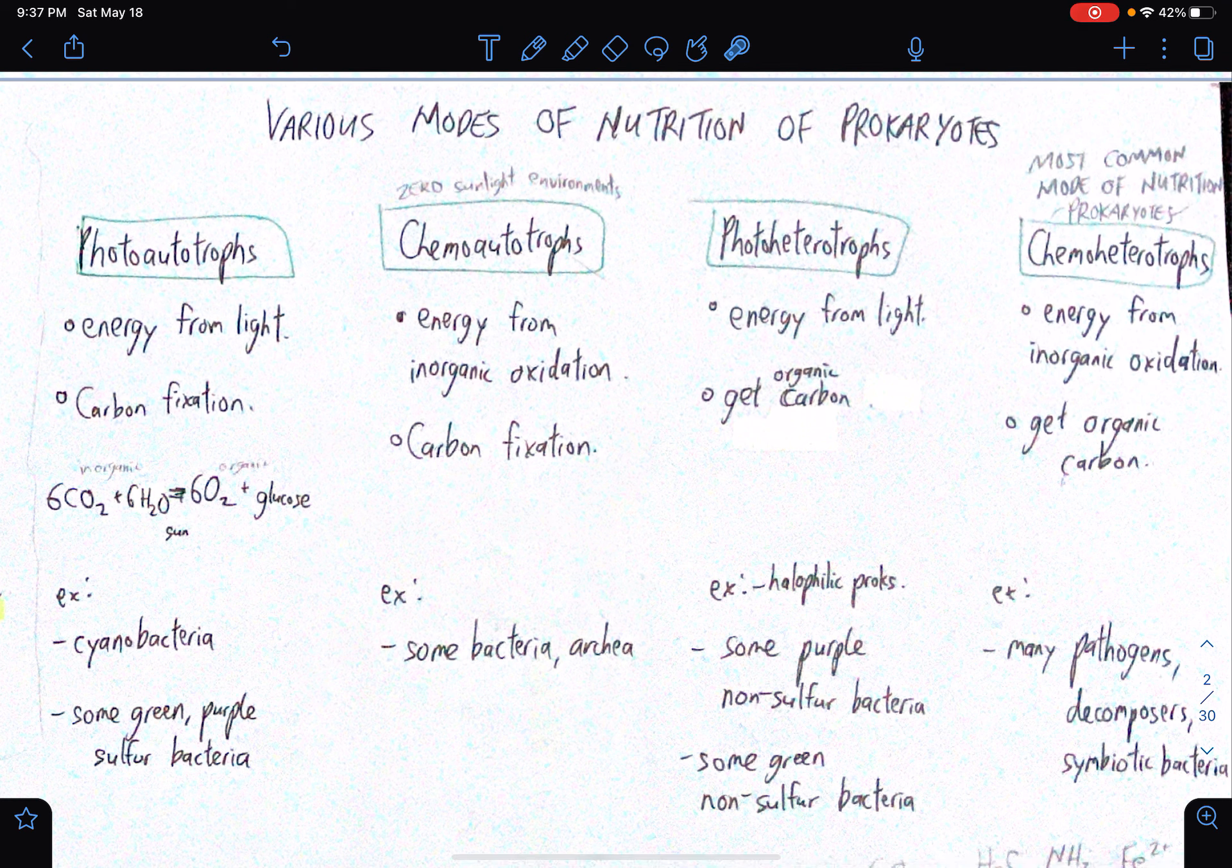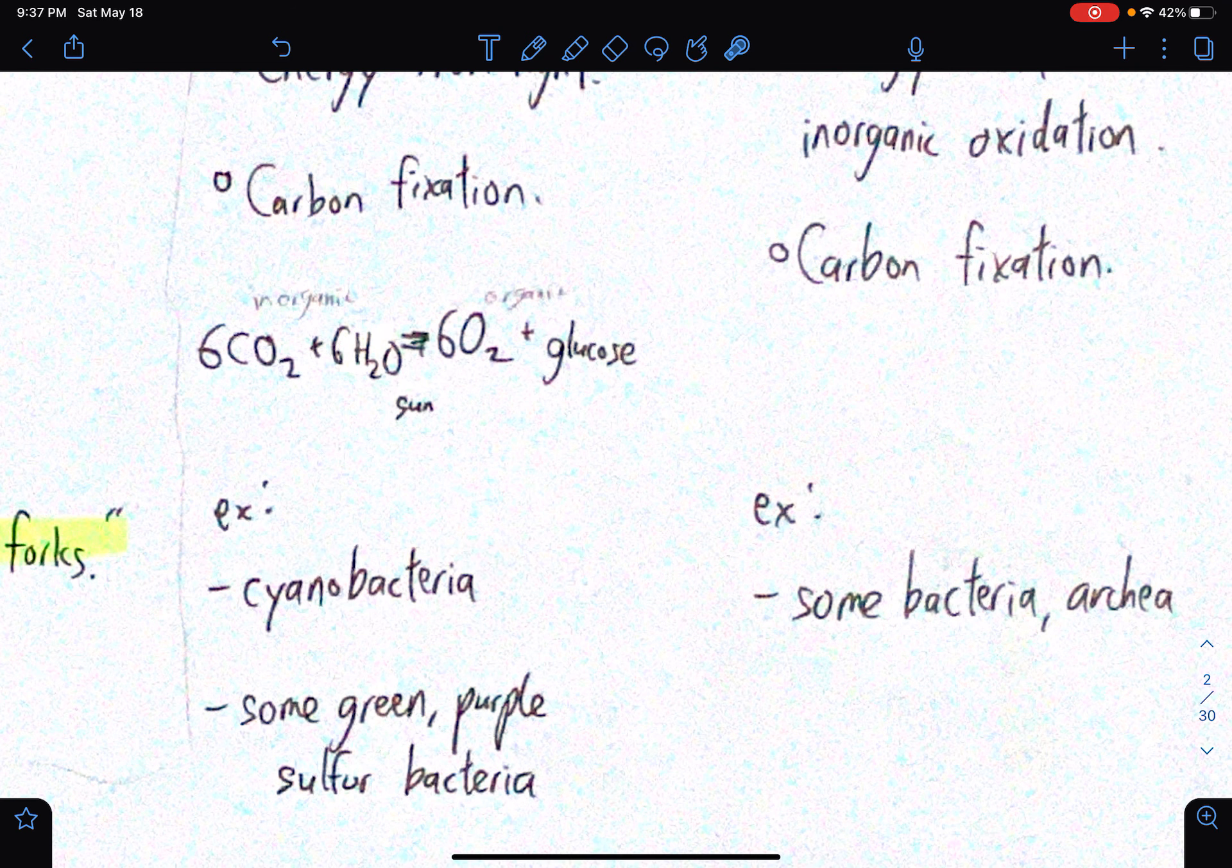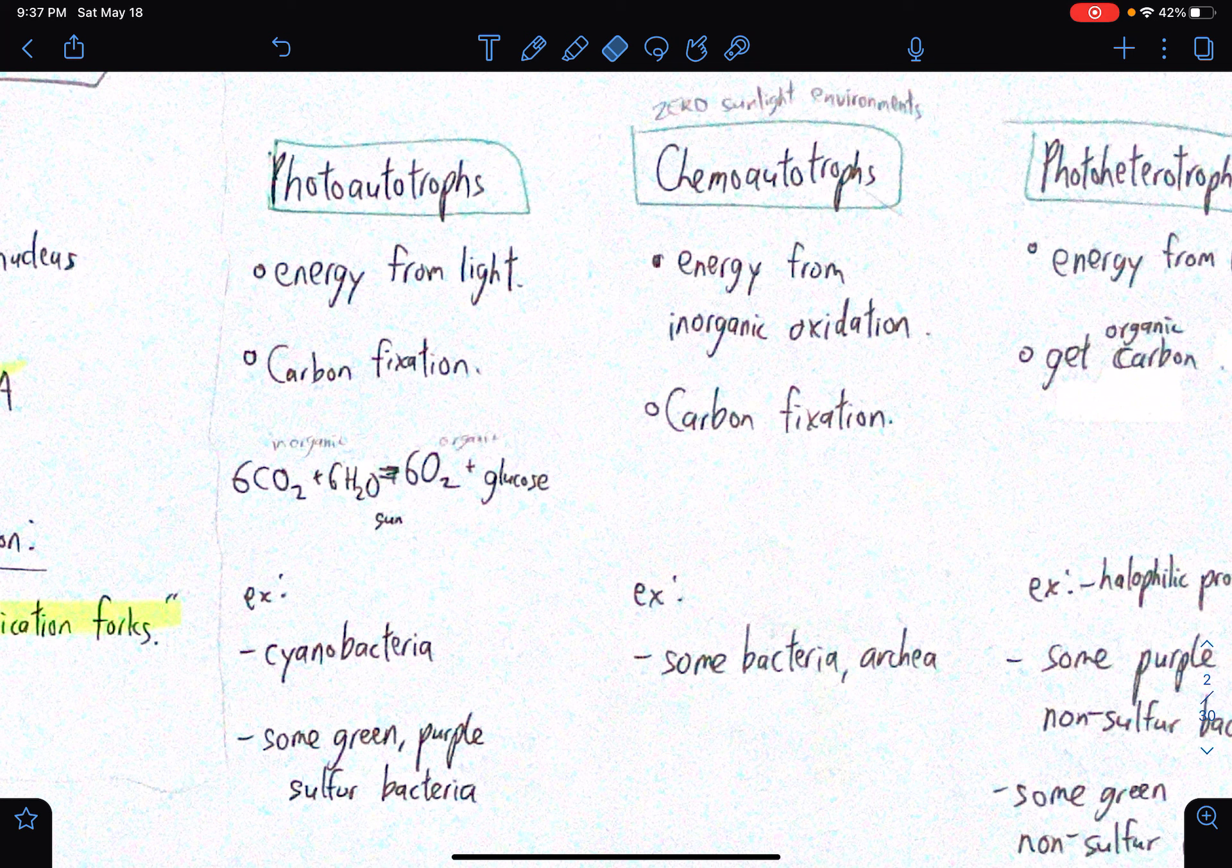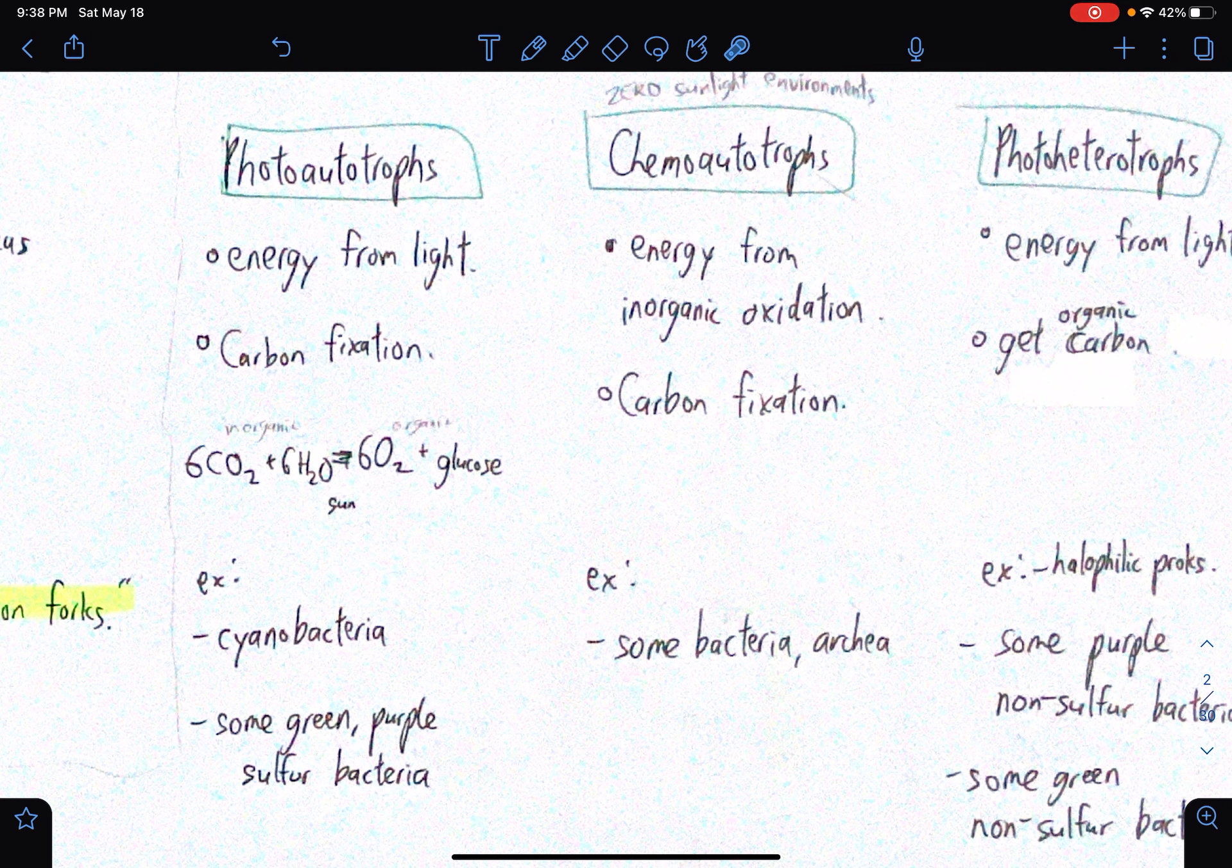Photo-autotrophs, they get energy from light, and they do carbon fixation. So for an example, we have cyanobacteria and some green-purple sulfur bacteria. I'm not sure why I wrote this, but then, ah yes, energy from light. So I think this is the equation of photosynthesis. Six carbon dioxide molecules, six water molecules is equal to six oxygen molecules plus glucose. So yeah, essentially, carbon fixation. Okay, just scrap what I just started to say. I'm not sure if this is relevant for prokaryotes. Let's move on.